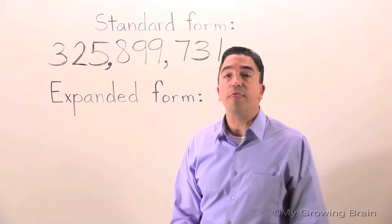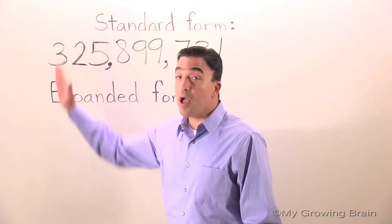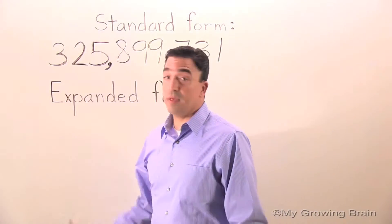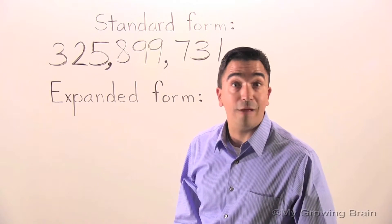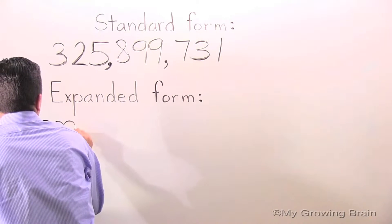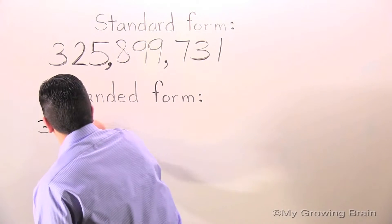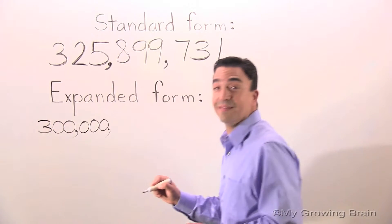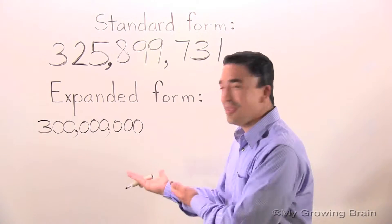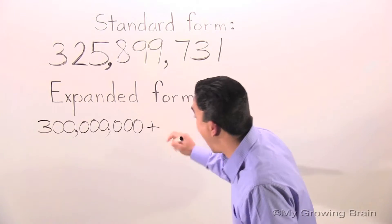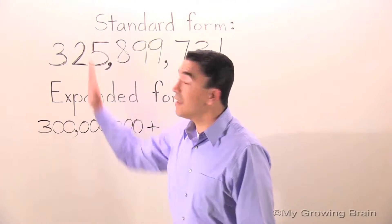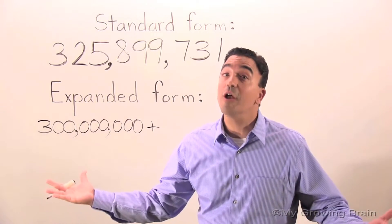We want to know the value of 3 in the hundred millions place. The value of 3 in the hundred millions place, which is 300 million. Let's write it. And now I'm going to add it to the value of 2 in the ten millions place, which is 20 million.